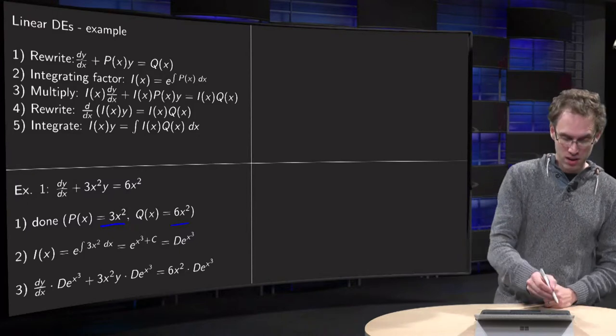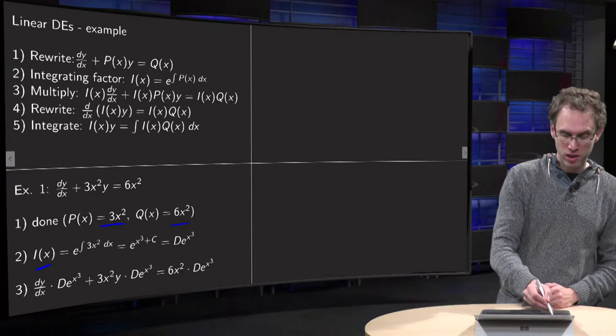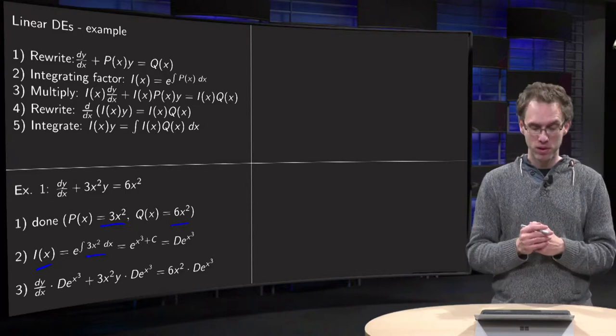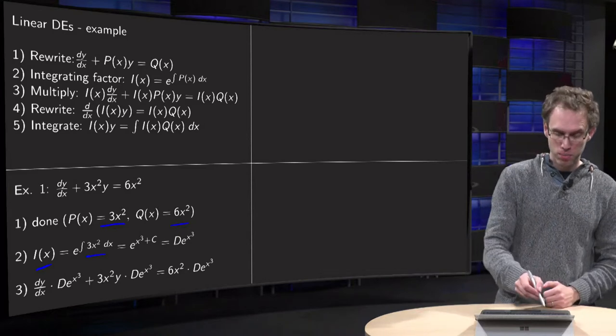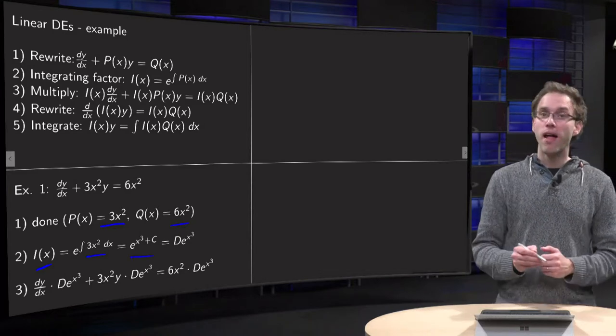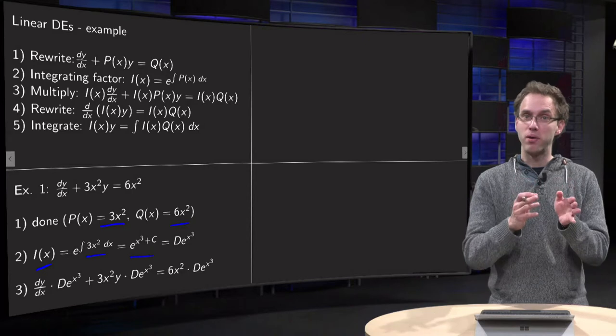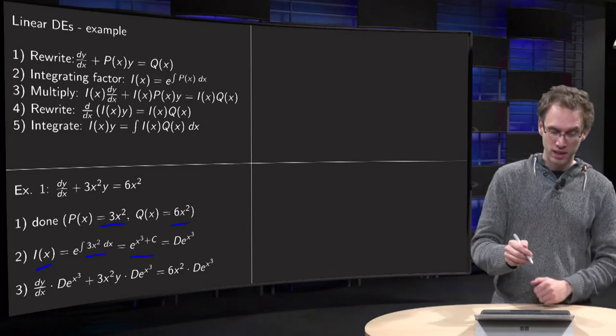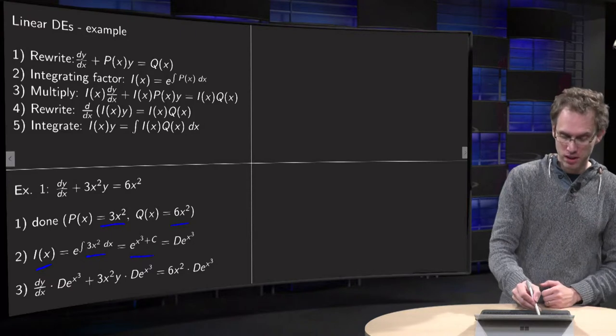So integrating factor equals integrate 3x² with respect to x and put it in an exponent. So of course x³ plus c. And you can write it as e to the power x³ times e to the power c and rename e to the power c as d, some other constant.